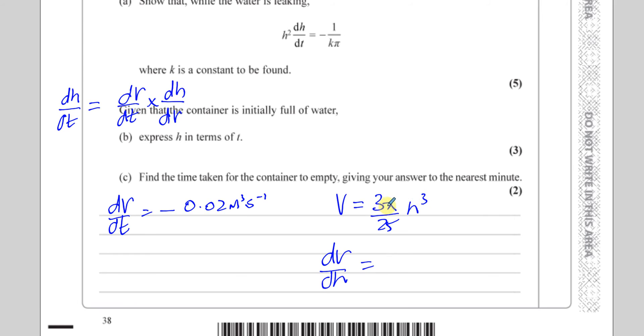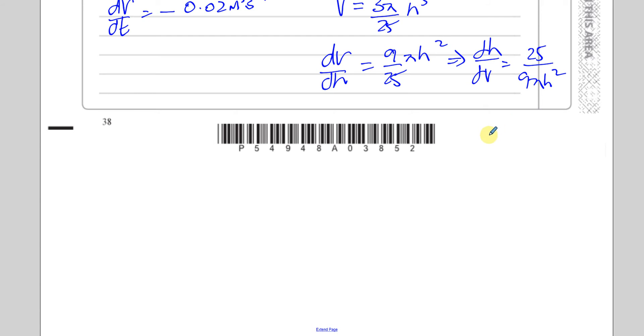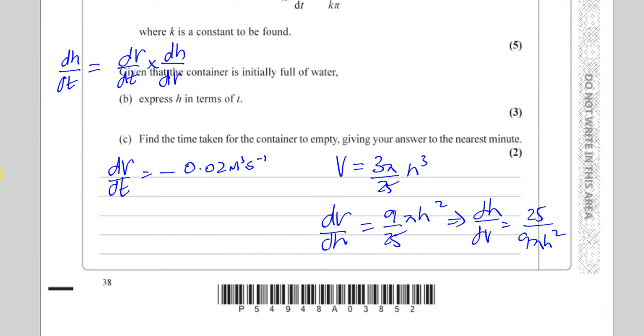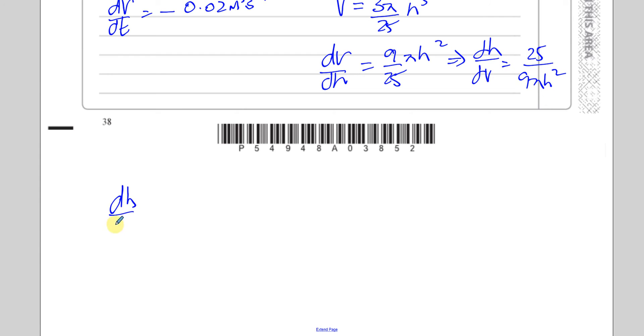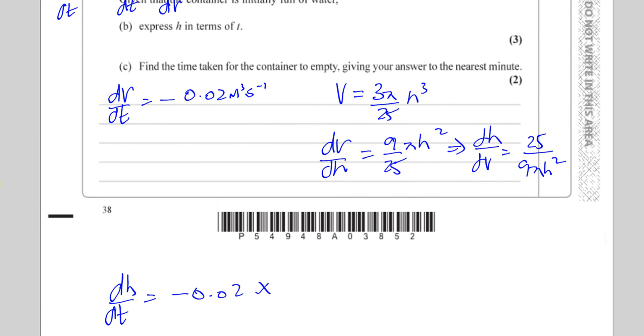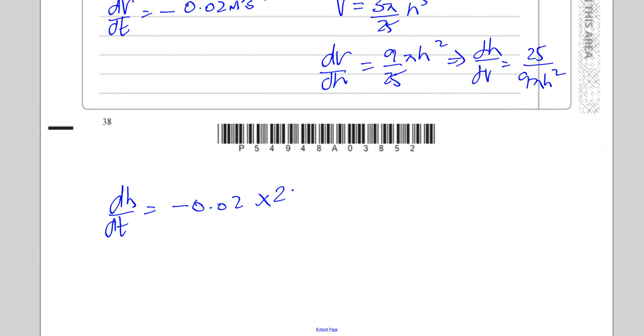dv/dh is going to be 3 times 3/25, which is 9/25, times π times h squared. So that means dh/dv is going to be the reciprocal of that, which is 25 over 9π h squared. So now we want to find dh/dt. So dh/dt is equal to minus 0.02 times dh/dv. So dh/dv is this, 25 over 9π h squared.